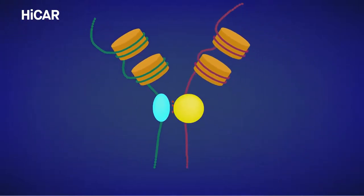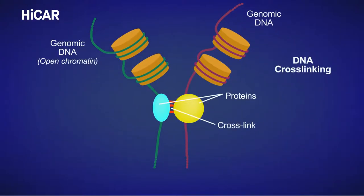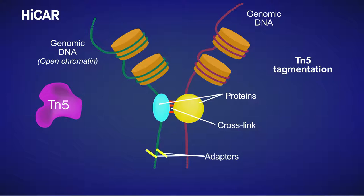In HICAR, cells are first cross-linked to fix the spatial interaction of the genome. They're then treated with a tagmentation complex that utilizes the enzyme TN5 transposase to insert an engineered DNA adapter into the accessible region of the DNA.